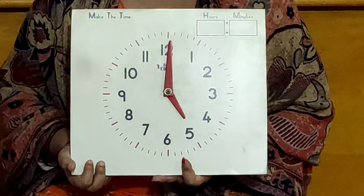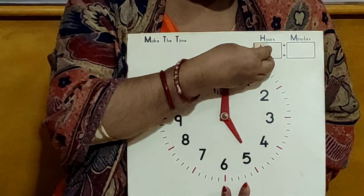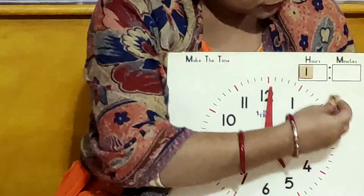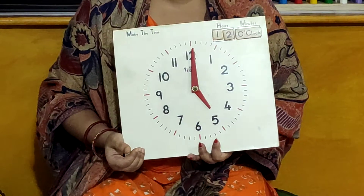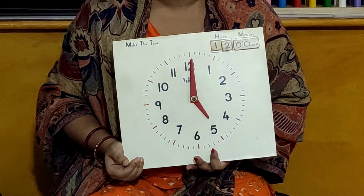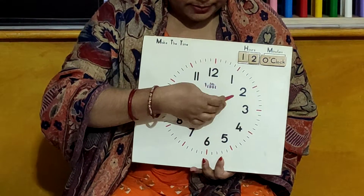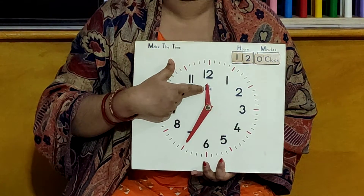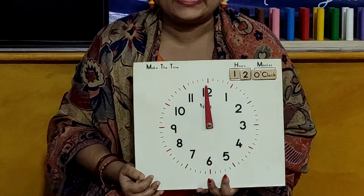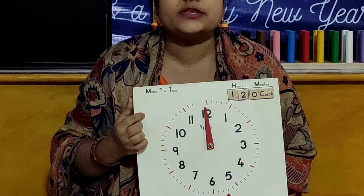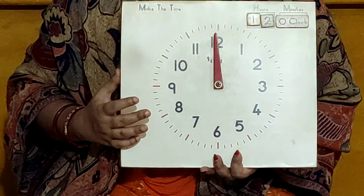Okay children, so first of all, we will make 12 o'clock. So children, let me place 12 o'clock. When the hour hand is on 12 and the minute hand is also on 12, the clock shows 12 o'clock. So children, now the clock is showing the time 12 o'clock.